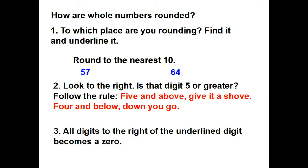How are whole numbers rounded? Well, I know this is review, but it's worth taking a look at again. First thing you need to ask yourself is to which place are you rounding? Well, find it and underline it. So we want to round to the nearest ten, we're going to take a look at 57, we're going to round to the ten, so I'm going to underline the tens place here, and I'm going to look to the right. And then you'll remember that rule that you learned earlier. Is that digit five or greater?